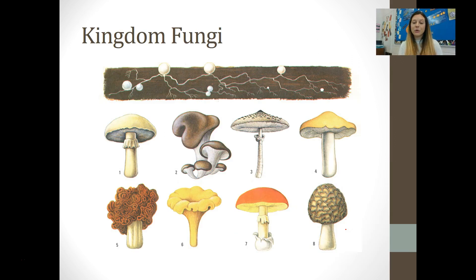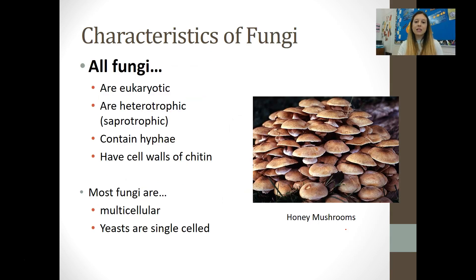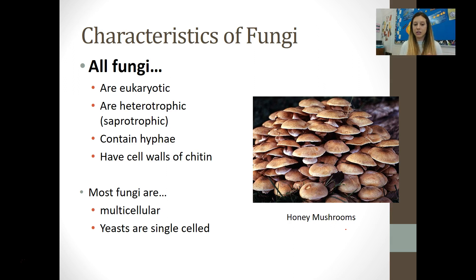Now we're moving on to our next eukaryotic kingdom: kingdom Fungi. The characteristics of fungi — why are they classified together? First, they are all eukaryotic, belonging to the domain Eukarya. They are all heterotrophic, and specifically saprotrophic, meaning they are decomposers. They contain filaments called hyphae and have cell walls made of chitin. Most fungi are multicellular, but there is one group that is unicellular: yeasts.